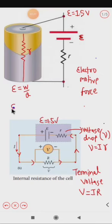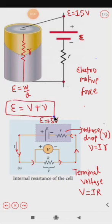So EMF is getting utilized outside the cell, which is known as terminal voltage, and inside the cell, which is known as voltage drop. Now using this and Ohm's law, I'll write this equation in terms of current and resistance.